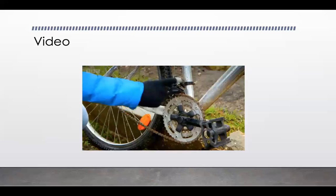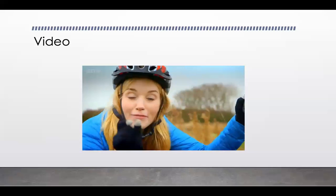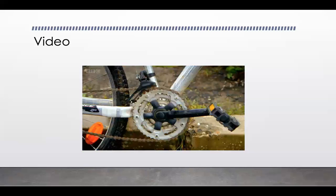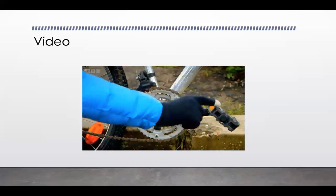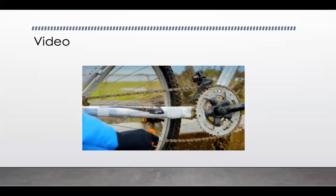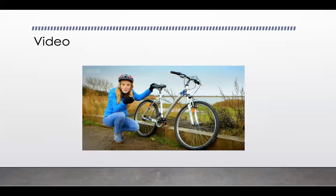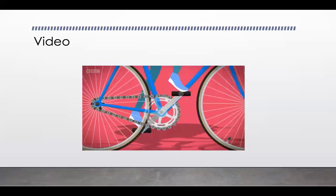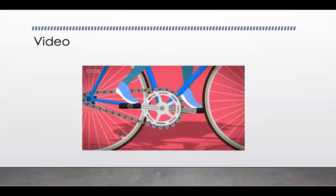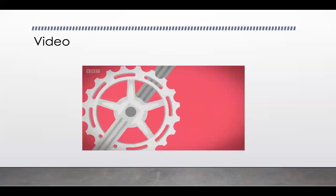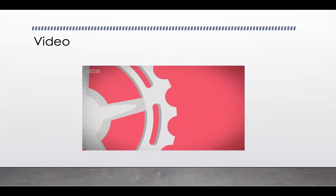The chain is a large metal loop made of smaller pieces called links. It goes around a large metal cog attached to the pedals, and you can follow it back to the smaller cog attached to the wheel. When you push the pedals, they turn the big cog round and round — the big cog has teeth all around the edge.